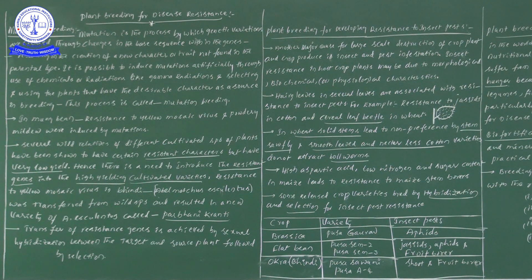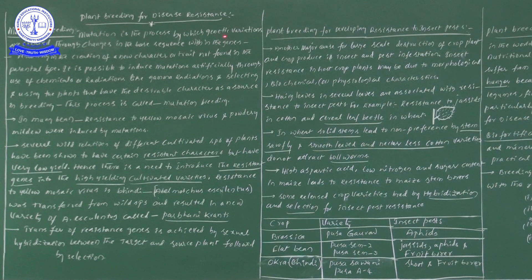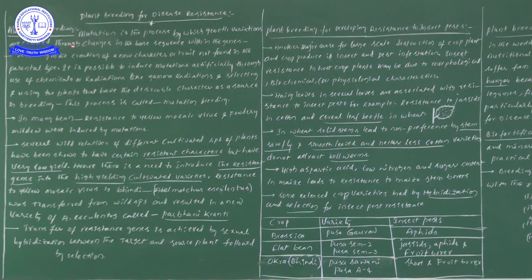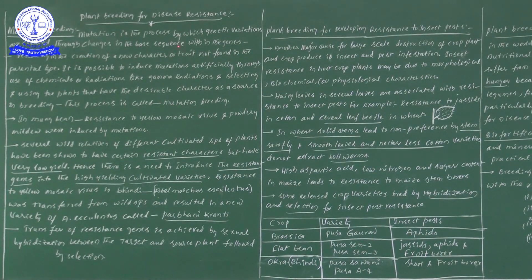Mutations is a process by which genetic variations are created — meaning the exact genetic information is changed. We bring some kind of variations through changes in the base sequence within the genes. Base sequence refers to the nitrogen bases: adenine with thymine and guanine with cytosine.